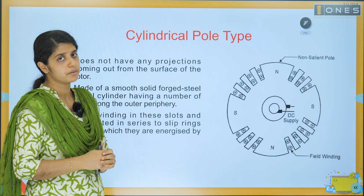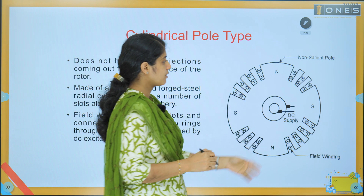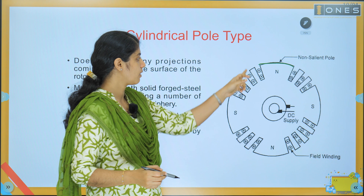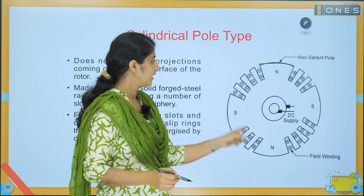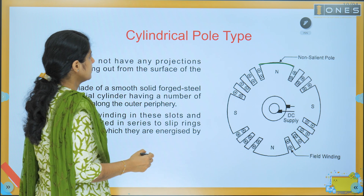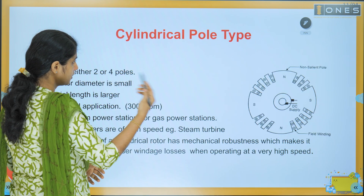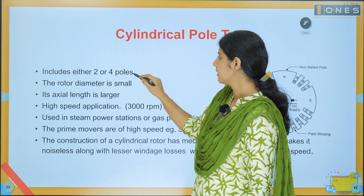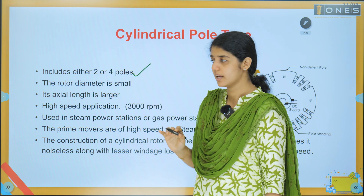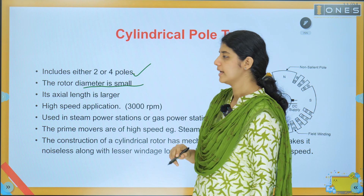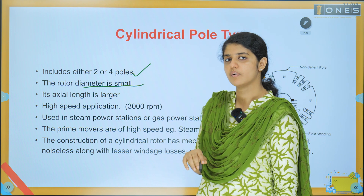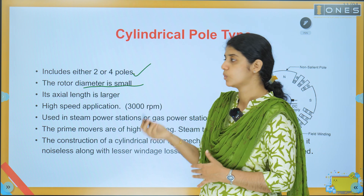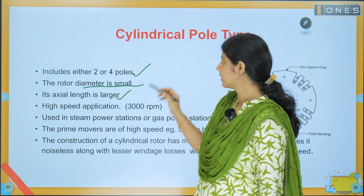The next structure is the cylindrical pole structure — a four-pole structure. The rotor surface is slotted, and the slots place the field windings to create north or south poles. These features are opposite to the salient pole. The cylindrical pole has fewer number of poles — two to four poles — and the rotor diameter is small.